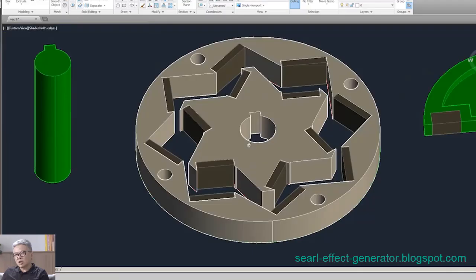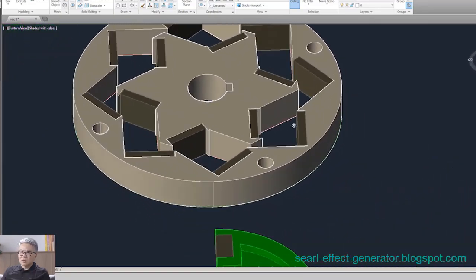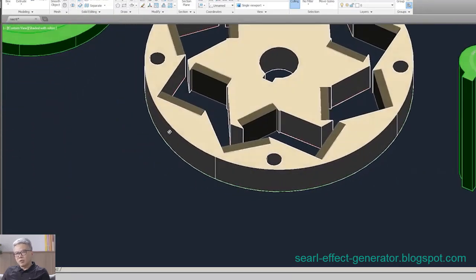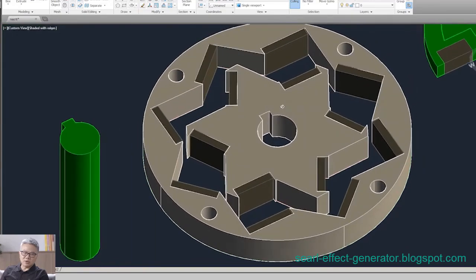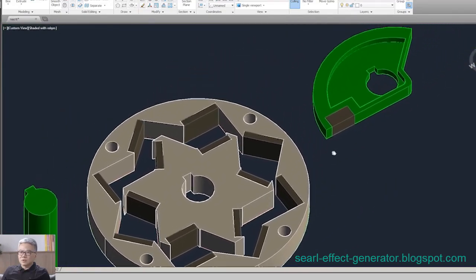The fundamental principle behind this magnetic motor involves the strategic use of magnetic shielding materials within the stator and rotor components. These materials create a magnetic chain, effectively reducing opposing magnetic fields. This unique design aims to harness magnetic potential energy efficiently, challenging conventional methods of power generation.